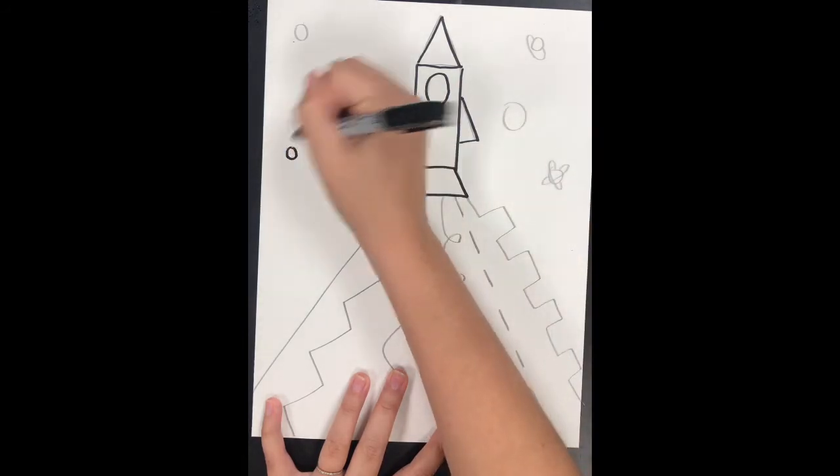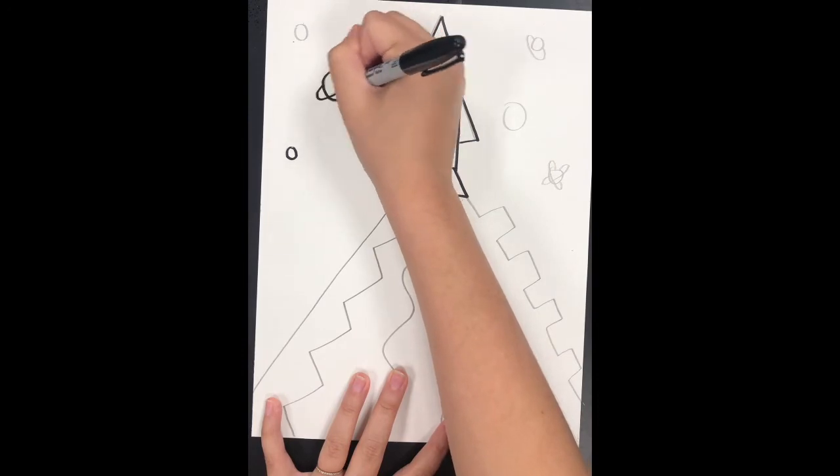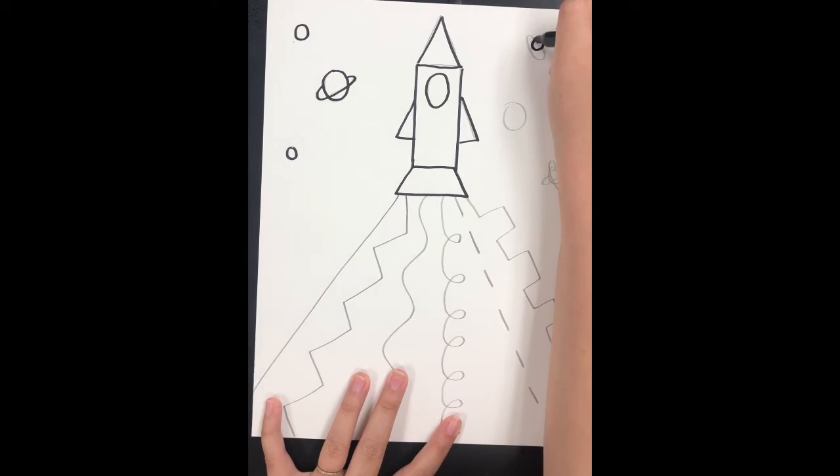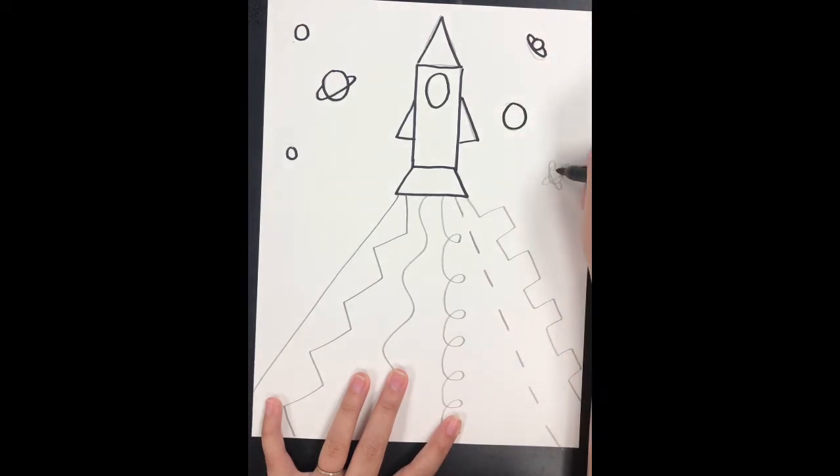We're just going to use the black marker to trace over our rocket, and if you made any planets or stars around your rocket. I'm going very slowly to stay on top of my pencil lines.